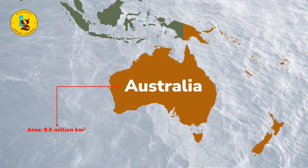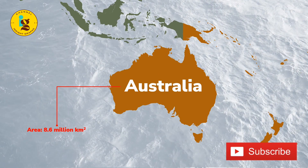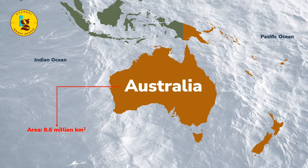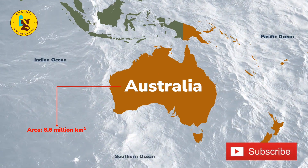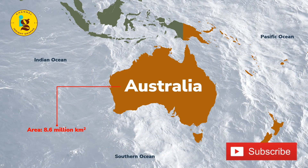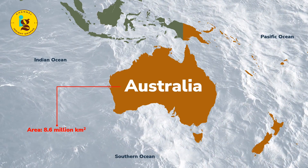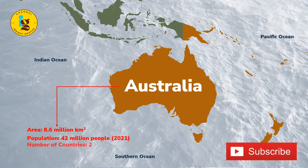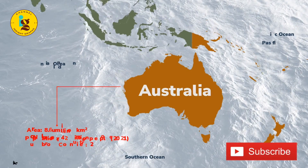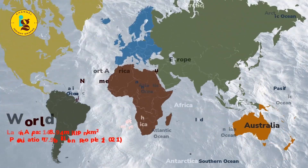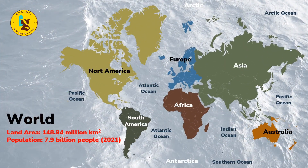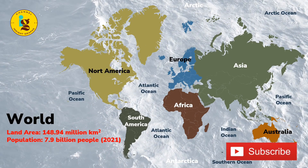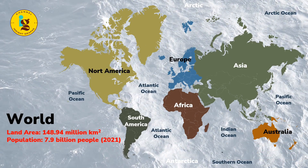Australia is located primarily in the southern hemisphere and is bordered by the Indian Ocean to the west, the Pacific Ocean to the east, and the Southern Ocean to the south. It has a population of over 42 million people and is home to two countries. The total land area of the world is approximately 148.94 million square kilometers.